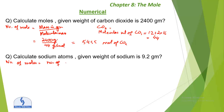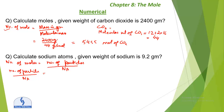Number of moles equals number of particles divided by Avogadro's number — where particles can be atoms, molecules, etc. We also know number of moles equals mass in grams divided by molecular mass. Since both left-hand sides are equal, we equate the right-hand sides: number of particles divided by Avogadro's number equals mass in grams divided by molecular mass.